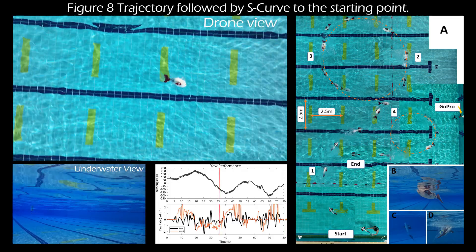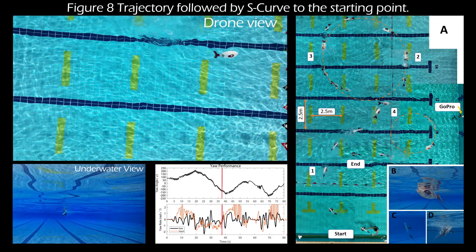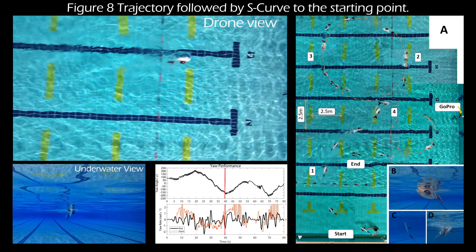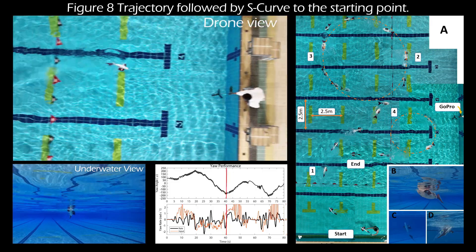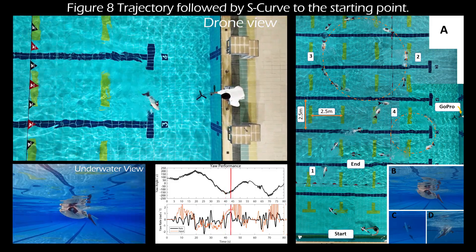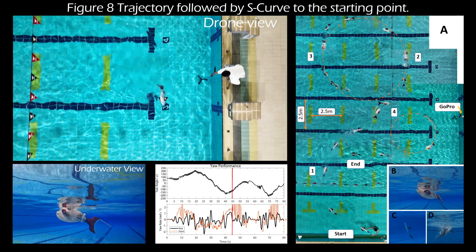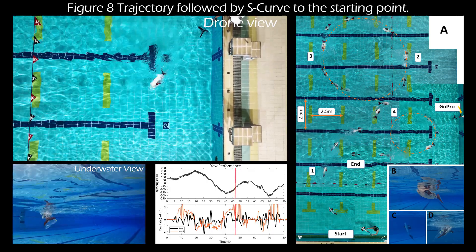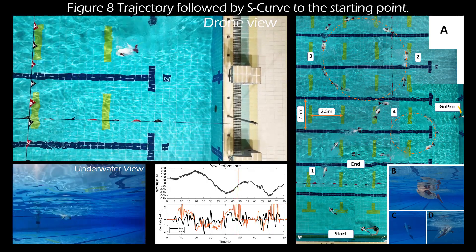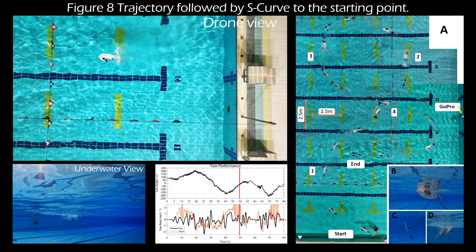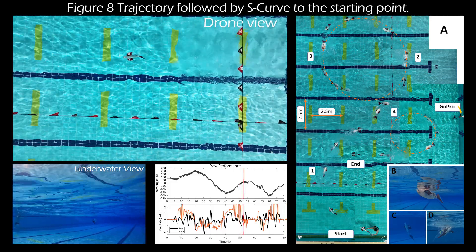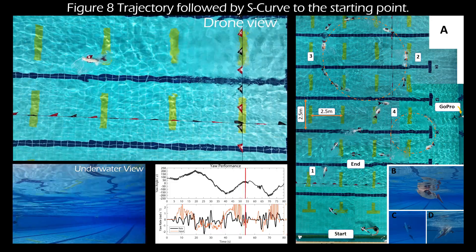The graph at the 20-second mark highlights this change, with a large acceleration from 1 radian per second to minus 1.5 radians per second. The active roll command is in play, and the pilot attempts a swim-and-hold to complete a tight turn of 2.5 meters using all the turn methods available, and accelerates to the end point of the figure-eight swim.